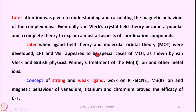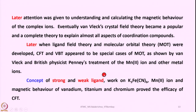Crystal field theory and valence bond theory almost appear to be special cases of molecular orbital theory. Molecular orbital theory has taken the best parts of both crystal field theory and valence bond theory. This modified molecular orbital theory is more or less the same as ligand field theory. Van Vleck and British physicist Penney worked on this, examining the magnetic properties of manganese ions and several other metal ions. Work on potassium ferricyanide, Mn²⁺, and the magnetic behavior of vanadium, titanium, and chromium proved the efficacy of crystal field theory.